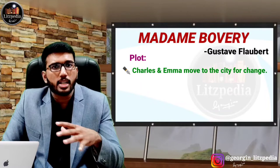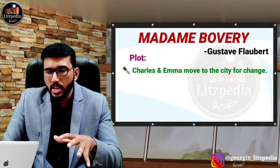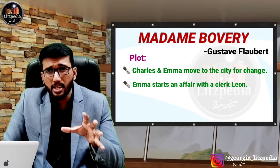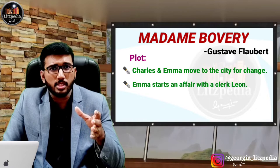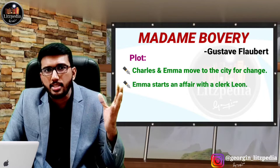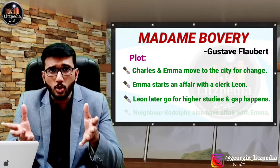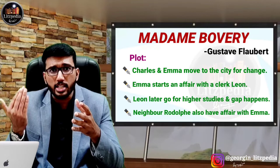After coming to the city, it is a different lifestyle from the village. Emma falls in love with a clerk called Leon. This does not last long — after some time she tries to avoid him, thinking about her family responsibilities. Leon then leaves for higher studies. After that, a rich neighbor called Rodolphe also has an affair with Emma for some time. When Leon returns, Emma has affairs with him again as well.